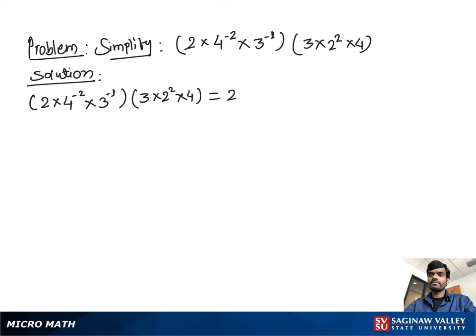So we can write 2 to the positive 1 times 2 squared times 3 to the negative 1 times 3 to the positive 1 times 4 to the negative 2 times 4 to the positive 1. We then add the exponents with the same base.